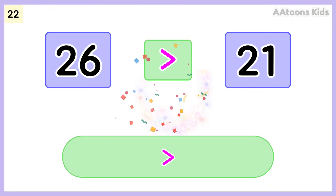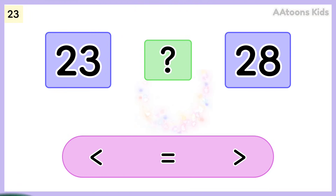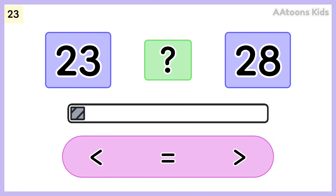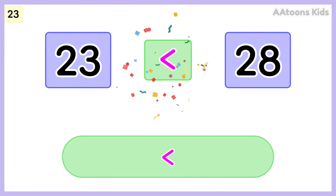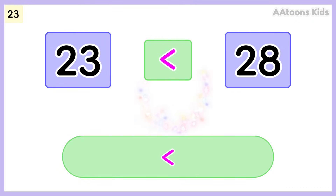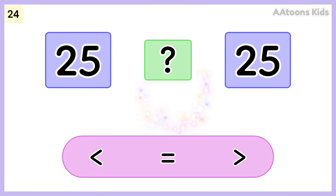Twenty-six is greater than twenty-one. Choose the correct symbol. Twenty-three is less than twenty-eight. Pick the correct symbol.